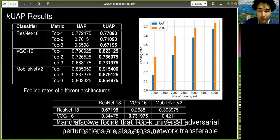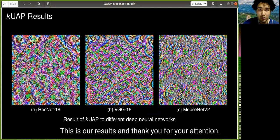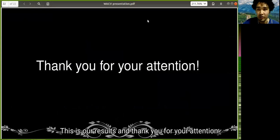And also, we found that top-k universal adversarial perturbations are cross-network transferable and require fewer images in the training set. So these are our results. Thank you for your attention.